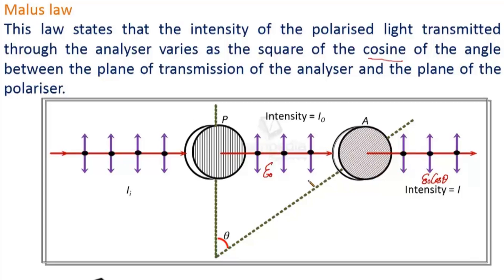So as you know that intensity is proportional to the square of the amplitude. So here suppose the intensity of polarized light is I₀ then this I₀ must be proportional to the square of the amplitude here, E₀. And suppose after passing through analyzer its intensity becomes I then I must be proportional to E₀ cos θ whole square.